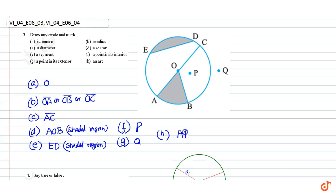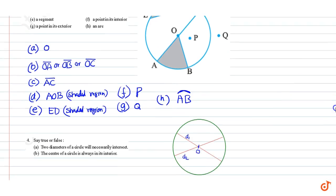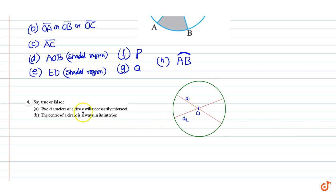Therefore AB is an arc of the circle. These are our answers to question number 3. Question number 4: say true or false. Part A: two diameters of a circle will necessarily intersect. We have drawn a circle with two diameters D1 and D2. D1 and D2 pass through the center of the circle, so two different diameters of a circle intersect at the center of the circle.